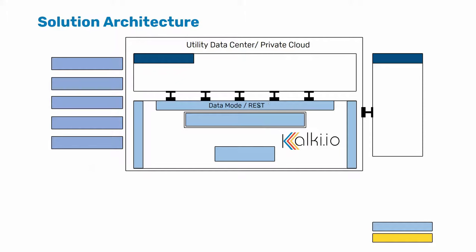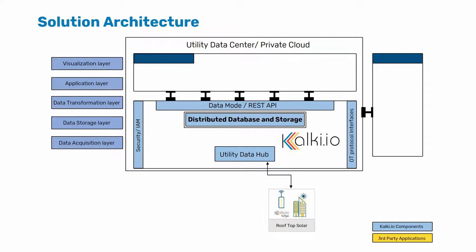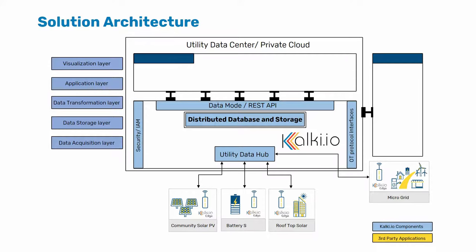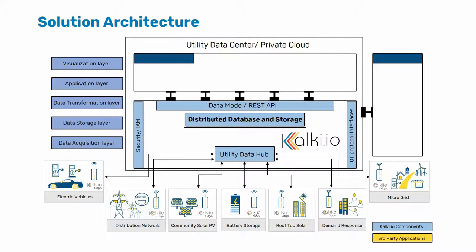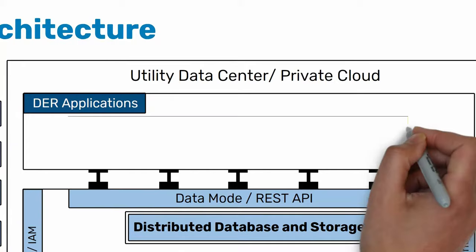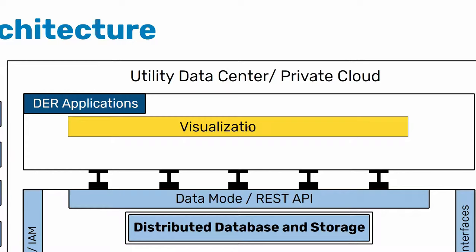Kolki.io utility data hub sits between DER assets in the field and DER applications and other OT systems. All DER devices — including rooftop solar, commercial and industrial solar plants, micro grids, energy storage systems, electric vehicles, and consumer demand response loads — can be directly connected with the utility data hub through Kolki.io edge gateways. The Kolki.io edge connects with DER devices over device-specific protocols and pushes data to the utility data hub over a secure link.